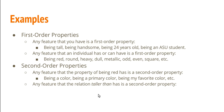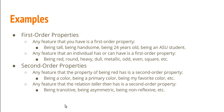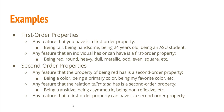Consider the relation of being taller than — this is a first order relation, and any feature it has is a second order property. For example, it's transitive: if I'm taller than you, and you're taller than Sally, then I'm taller than Sally. This is a feature it shares with the relationship of numerical identity. Taller than is also an asymmetric relationship: if I'm taller than you, you can't be taller than me. And it's non-reflexive — I can't be taller than myself. So any feature that a first order property or first order relation can have is itself a second order property.